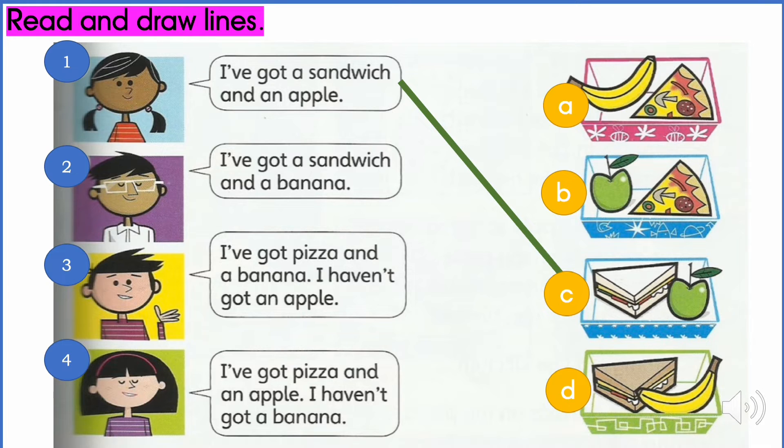Number two. I've got a sandwich and a banana. The answer is D. Very good.